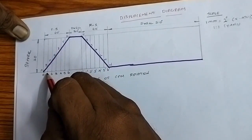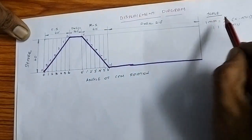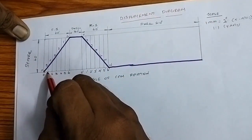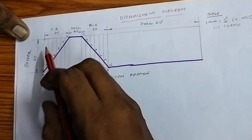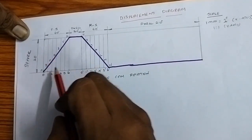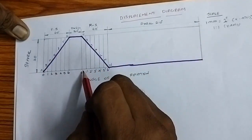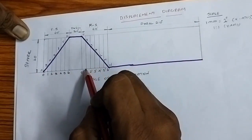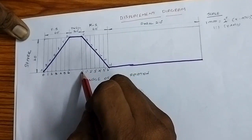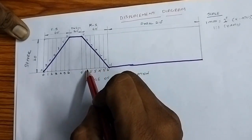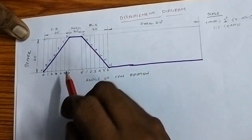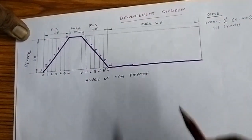Since 1 mm equals 2 degrees, each 10-degree division is 5 mm in length. Mark 6 equal parts along the forward stroke and draw vertical lines through each point. The vertical lines should be parallel to the y-axis. Similarly, for the return stroke, divide 60 degrees into 6 equal parts of 5 mm each, and draw vertical lines at each point.